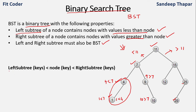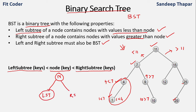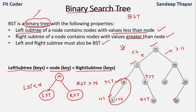We can generalize it by saying that the key in the left subtree should be less than the node, and the right subtree should be greater than the node. This should hold for each node of the tree. If these properties are satisfied, then that binary tree can be called a BST or binary search tree.